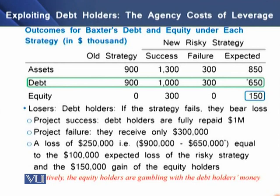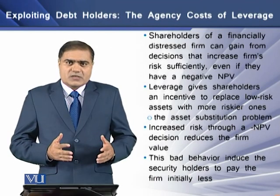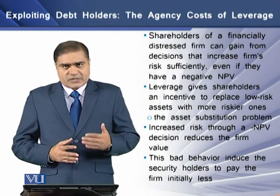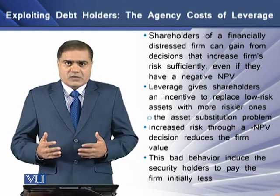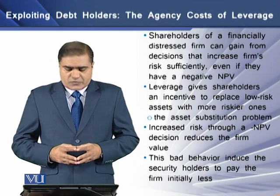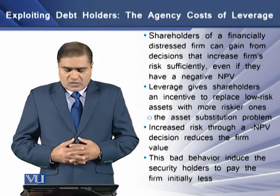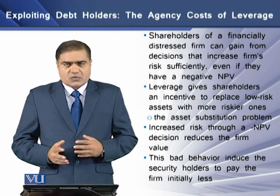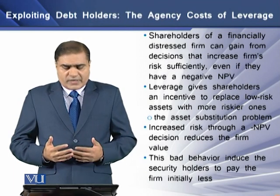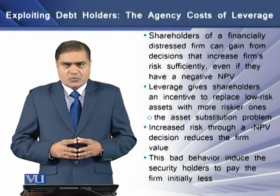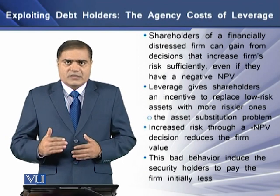So effectively, the equity holders are gambling with the money of the debt holders. Shareholders of a financially distressed firm can gain from decisions only when those decisions increase the firm's riskiness sufficiently, even if there is a negative NPV. Leverage also gives shareholders an incentive to replace low-risk assets with riskier ones — that is essentially the asset substitution problem. Increased risk through a negative NPV project reduces the firm's value, and this bad behavior leads security holders to pay a lesser amount to the firm at the initial stage.